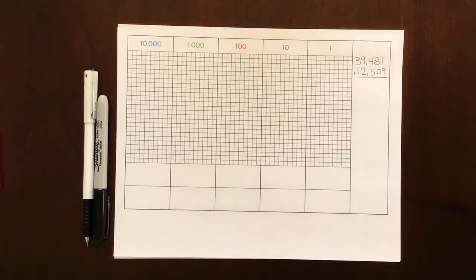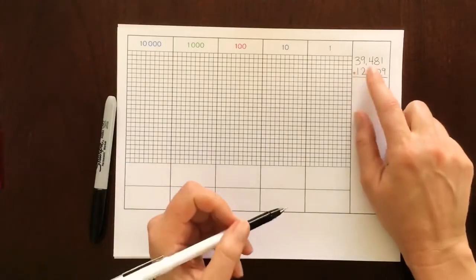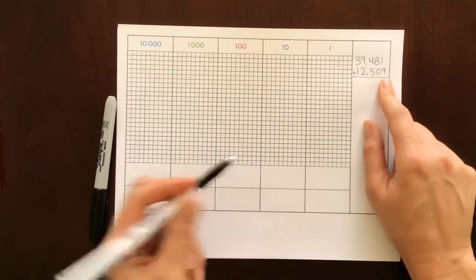Today I'm going to show you how to do dynamic addition using the Montessori dot game. Over here we have our problem: 39,481 plus 12,509.